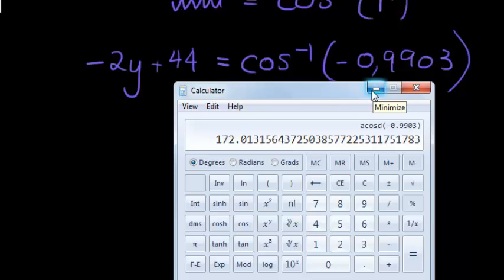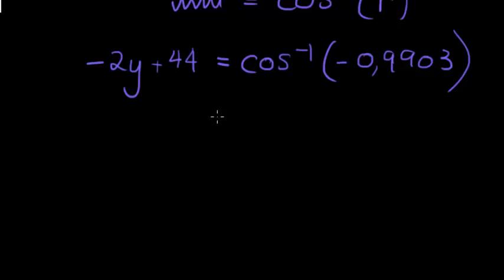So 172.01, let's round to one decimal place. I'm sure this is 172. So we get that negative 2y plus 44 is equal to 172 degrees. These are all degrees. And now, all I need to do is solve y, it's a normal equation.